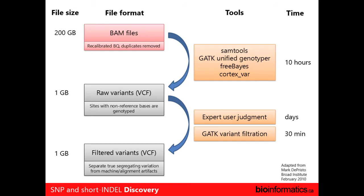If we look at the pipeline from a file-centric view, if you have a full human genome, you might have about 200 gigabytes worth of BAM files that have recalibrated base qualities and duplicates removed. From there, you want to produce a raw VCF file, which contains all the SNPs. What can you actually use to do variant calling? SAMtools has one, GATK has one — that's the one we'll be using today. Freebayes was created in Aaron's lab and at Gabriel Marth's lab. Cortex-Var is another variant caller. That process could take anywhere up to 10 hours depending on how you process it.